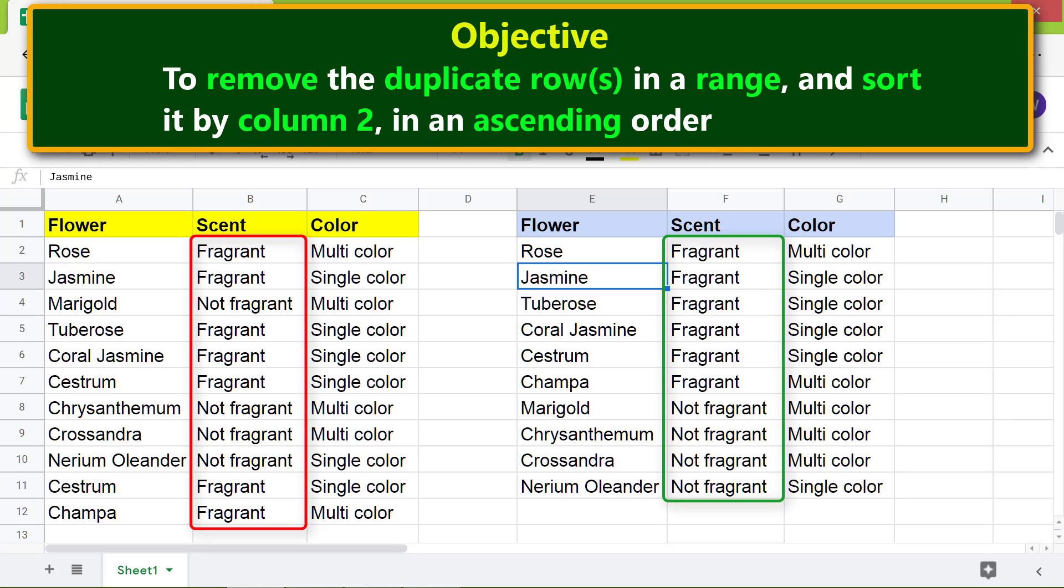Moving forward, do you want to sort by the third column instead of the second column? All you need to do is change the sort column number to 3 in the formula. Let's go ahead and do this.